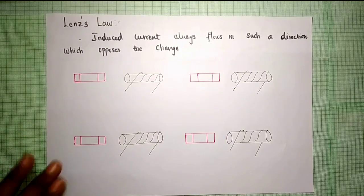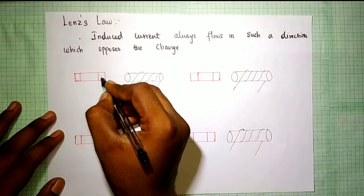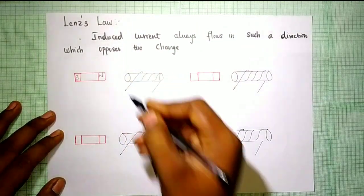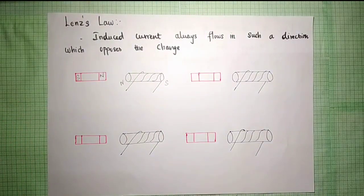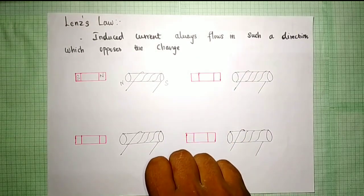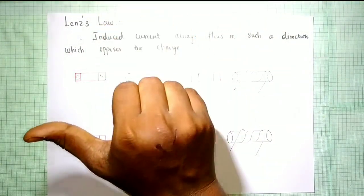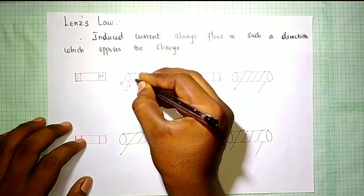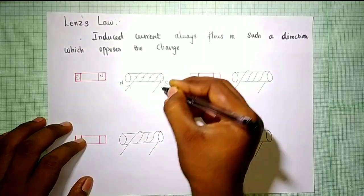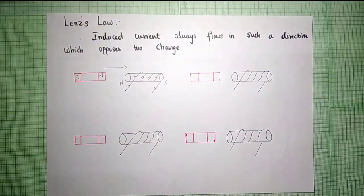Let's explain. There is a solenoid and a bar magnet. We assign the north pole moving toward the south pole end. Using the right-hand thumb rule, the solenoid also acts as a north pole on that face. As the magnet moves forward, the current flows in the forward direction to oppose the approaching north pole.